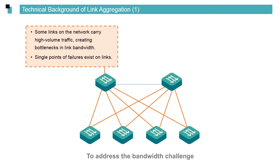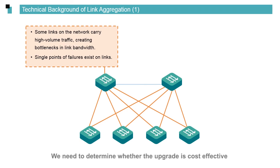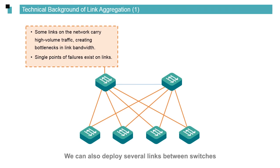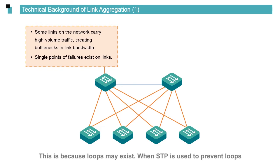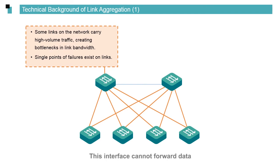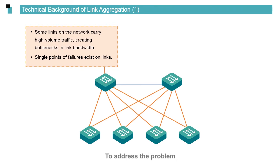To address the bandwidth challenge, we can upgrade 100 Mbps interfaces to 1000 Mbps interfaces, but we need to determine whether the upgrade is cost-effective and whether the switch interfaces are supported. We can also deploy several links between switches; however, loops may exist. When STP is used to prevent loops, a certain interface will be blocked and cannot forward data, meaning that bandwidth is not increased. To address this problem, Ethernet link aggregation is introduced.